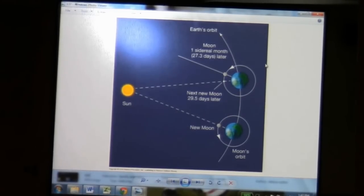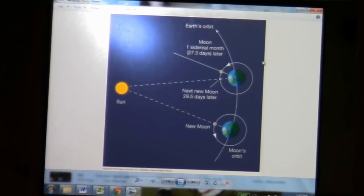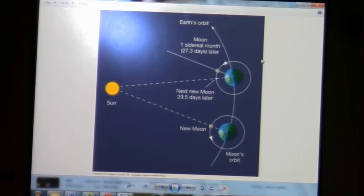Let's do the lunar month. There are two months, just like when we were talking about days. We had the solar day, we had the sidereal day. Two different ways to define a day. There are two different ways you can define a month.